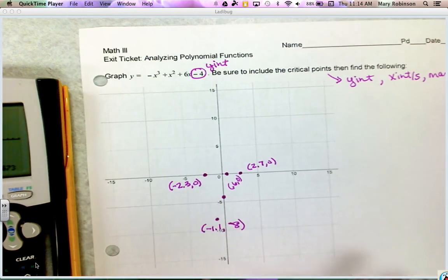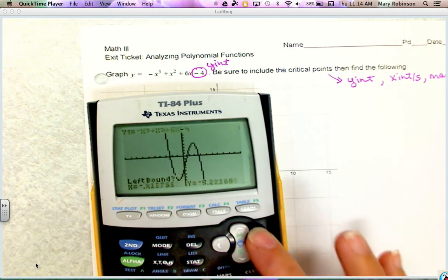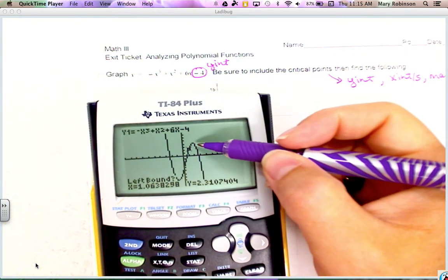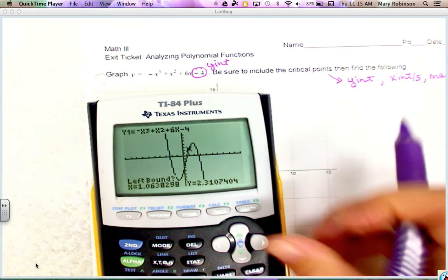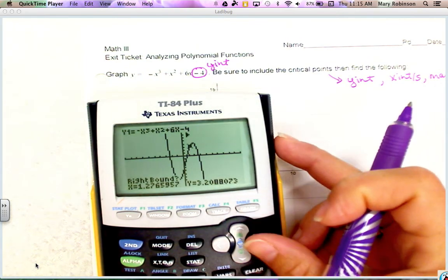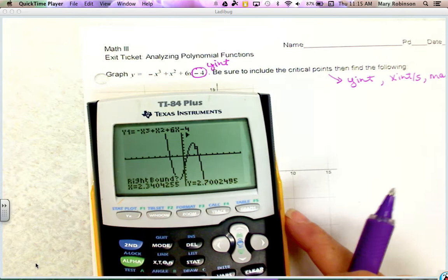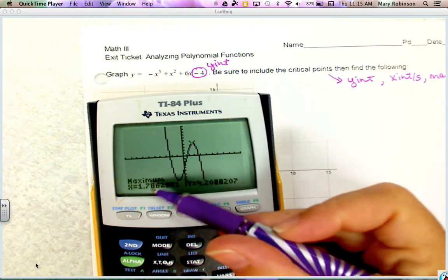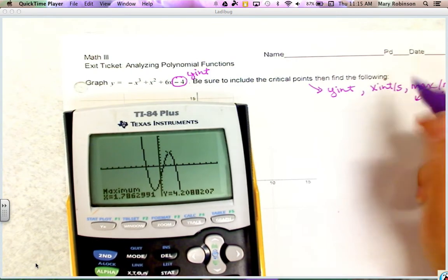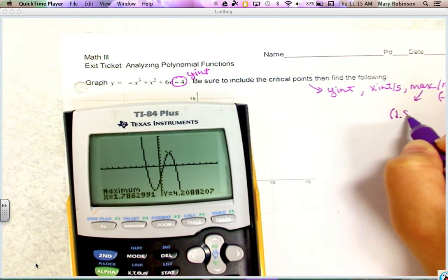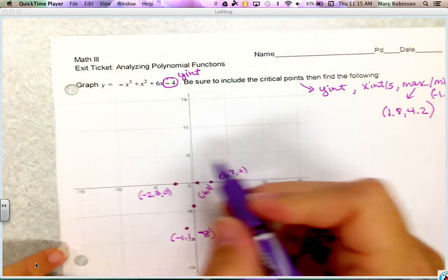Next I need to locate my max, so 2nd trace max. Same process here - here is my maximum point, but I'll need to mark my left bound to the left of this point, so I'm going to hit enter to do that. It asks for right bound, so I'm going to move my cursor to the right, hit enter and enter again. There it tells me my maximum. I'll write it over here: my maximum was about (1.8, 4.2).